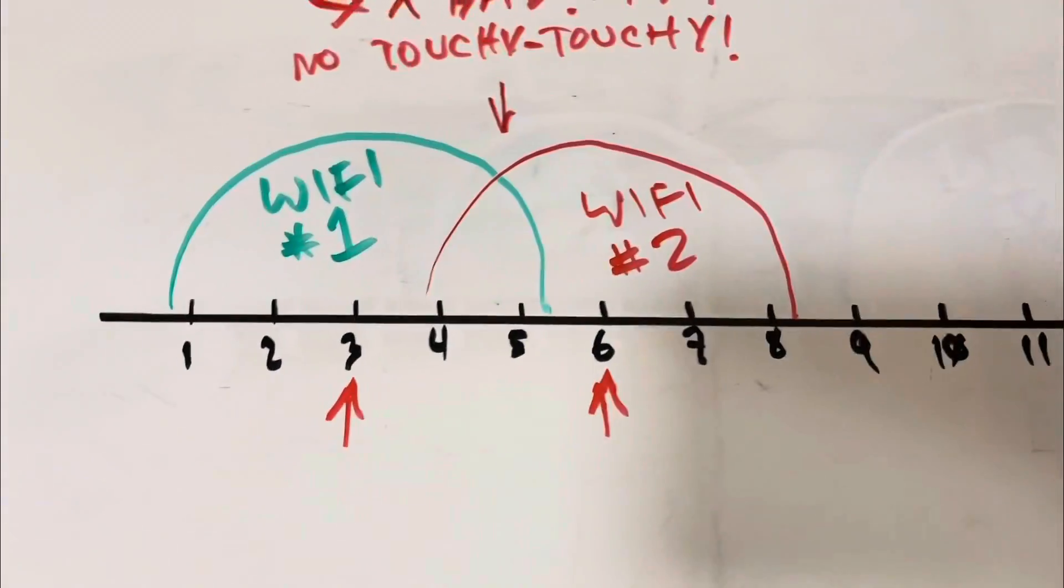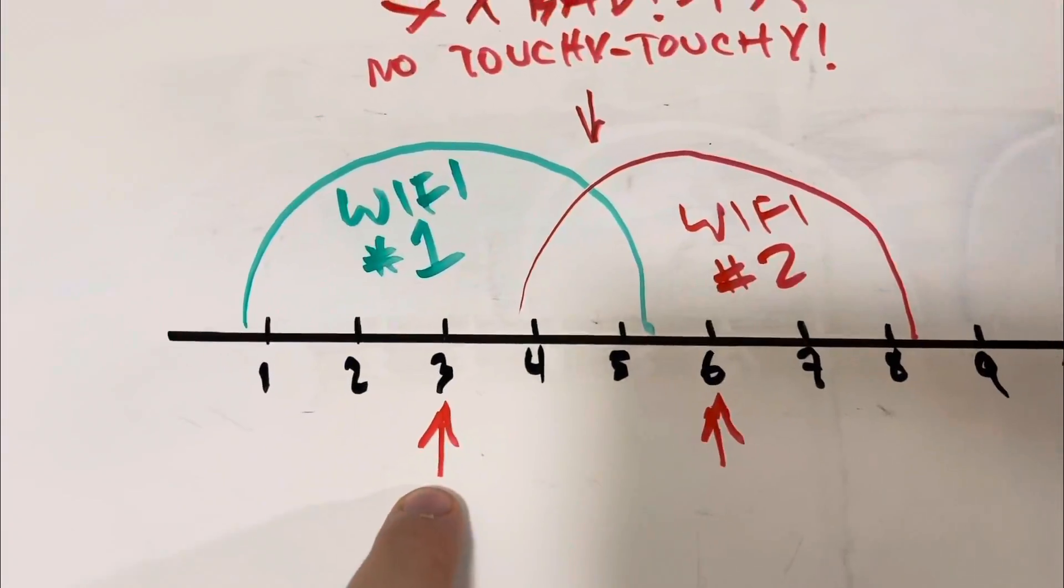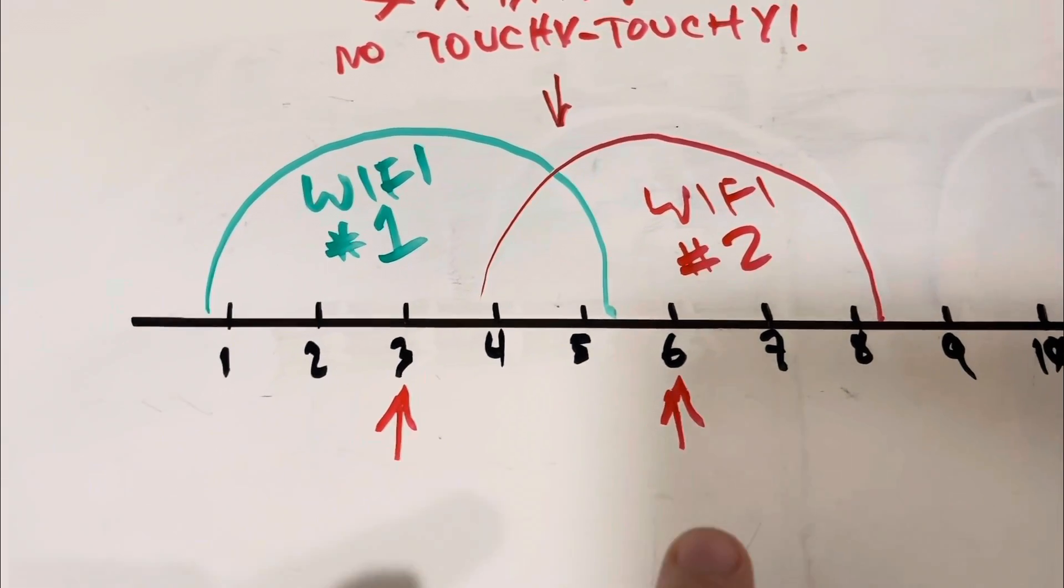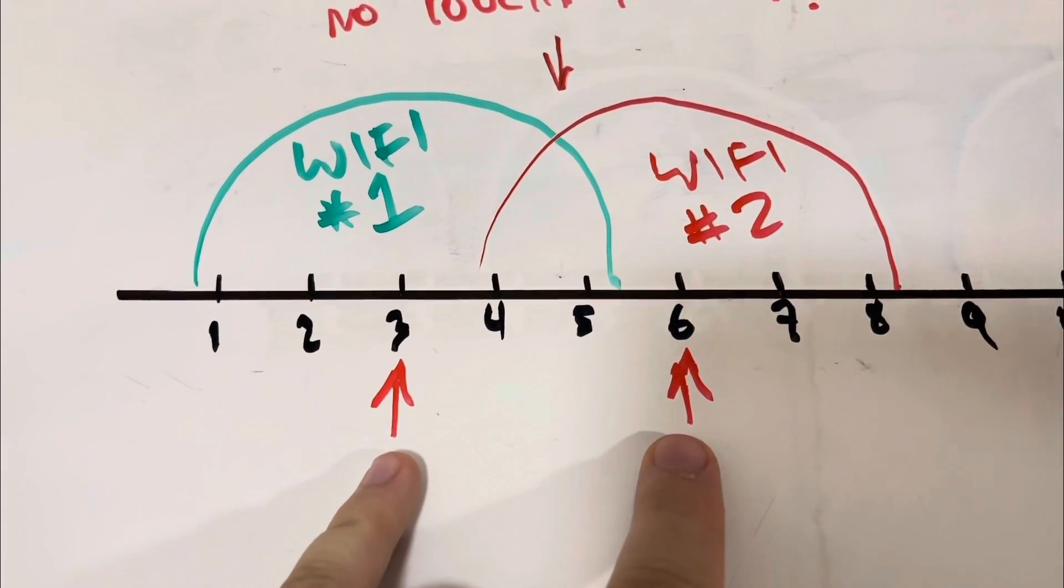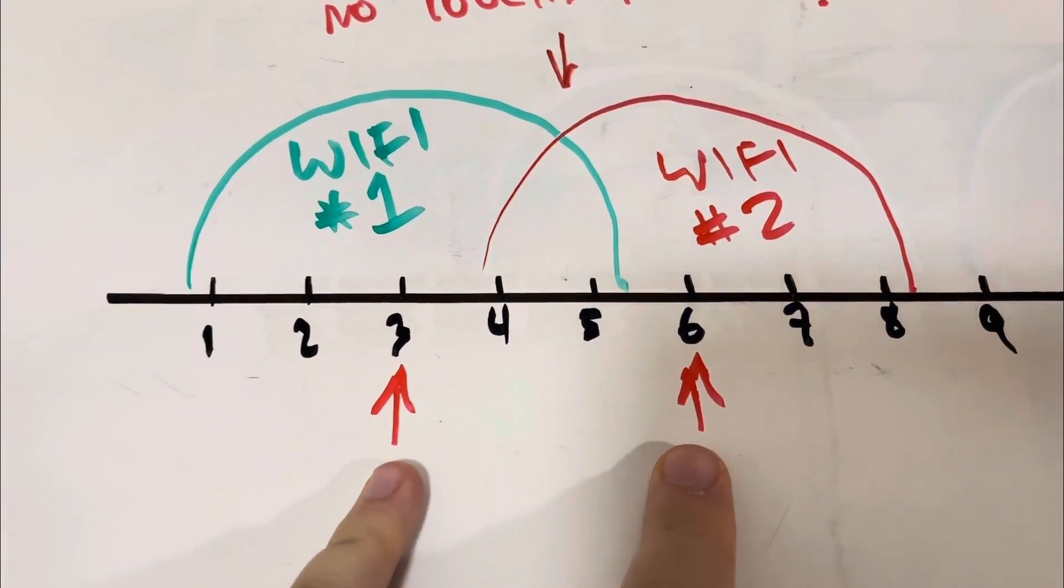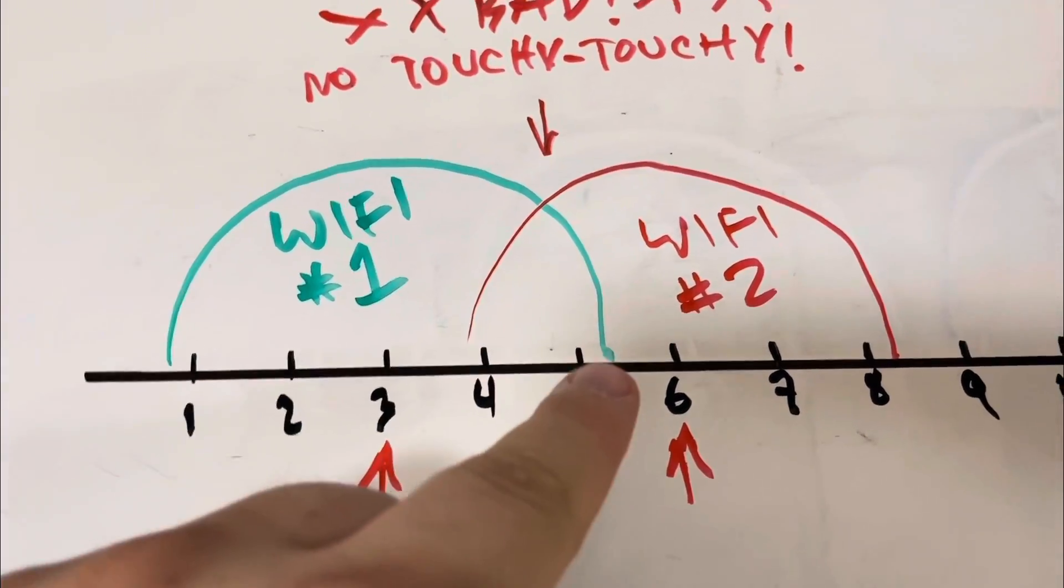Here we have two Wi-Fi networks. One is on channel 3 and one is on channel 6. Now you might think that just because they're set to different channels, that that might be okay. But you'll see here, they actually overlap with each other.